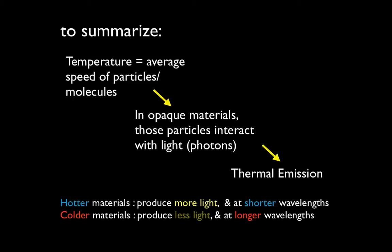So to summarize, temperature means the average speed of particles or molecules. Particles or molecules in a material have a whole distribution of speed. Some will be very slow, some will be very fast. The average speed of the entire distribution, we consider the temperature. In opaque materials, those particles are constantly interacting with light or photons. That interaction between the light and the particles allows the two to reach some sort of equilibrium, and that causes thermal emission. Because the temperature is related to the speed of particles, this means that hotter materials will have faster particle motion, and therefore will produce more light, and that light will be at shorter wavelengths. Colder materials produce less light, and that light is emitted at longer wavelengths.